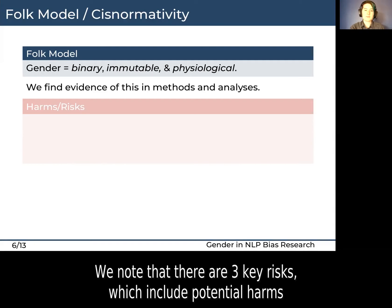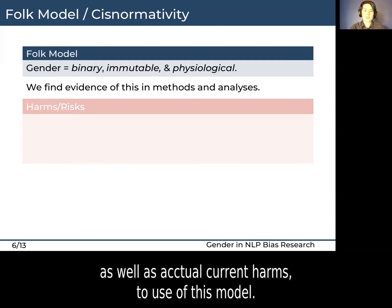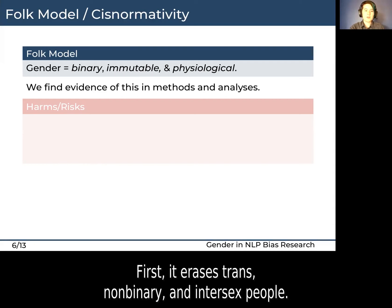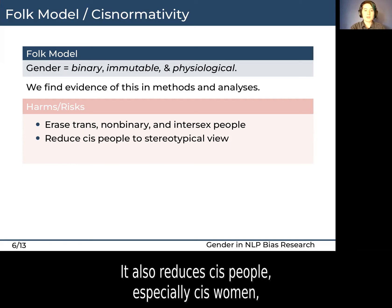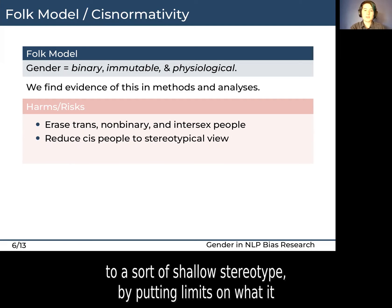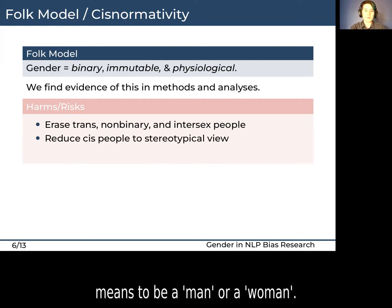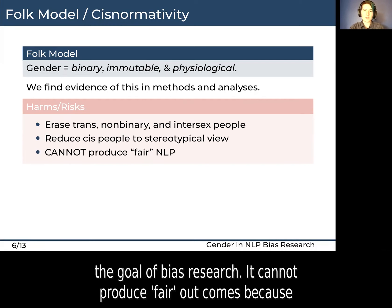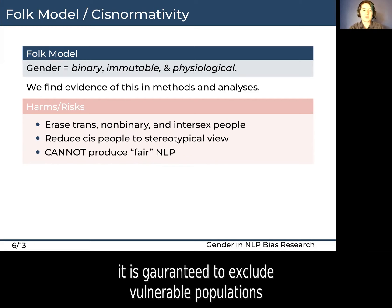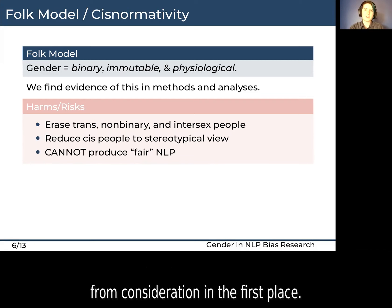We note that there are three key risks, which include potential harms as well as actual current harms, to using this model. First, it erases trans, non-binary, and intersex people, further putting them in harm's way by being unintelligible to systems. It also reduces cis people, especially cis women, to a sort of shallow stereotype by putting limits on what it means to be a man or a woman. And perhaps most importantly, this model is completely at odds with the goal of bias research — it cannot produce fair NLP outcomes because it is guaranteed to exclude vulnerable populations from consideration in the first place.